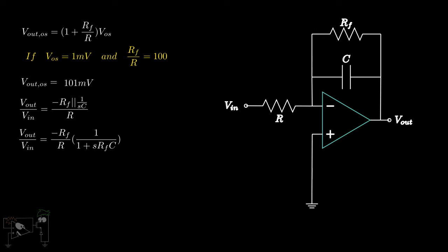Thus, the circuit now contains a pole at minus 1 by RFC, rather than at the origin. The frequency domain plot looks like this, in which the corner angular frequency is at 1 by RFC. That is, the integration function holds for input frequencies much higher than 1 by RFC.